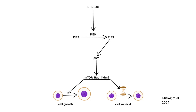AKT phosphorylates BAD, an apoptotic regulator, effectively inhibiting cell death pathways. It also activates MDM2, which suppresses the tumor suppressor protein P53 and enhances cell survival. The PI3K-AKT pathway is often dysregulated in melanoma cells, with mutations in PI3K, AKT, or upstream regulators like RTKs or RAS, making it a critical target for therapeutic interventions aimed at inhibiting melanoma progression.